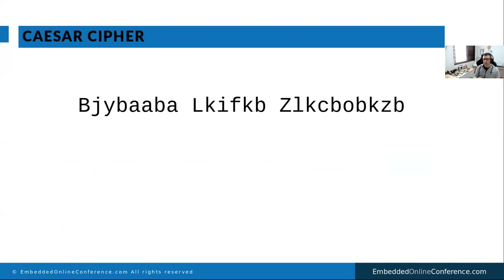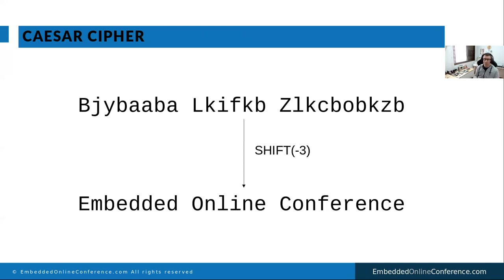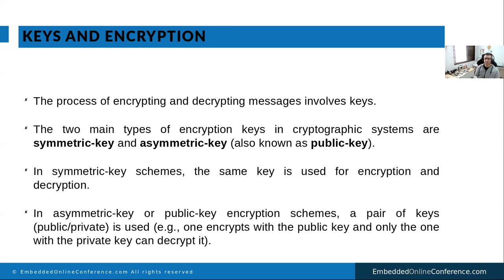Here's a simple and well-known example of encryption — a ciphertext you might recognize. This uses the Caesar cipher: it shifts characters. Our key here is minus three, so D becomes A, E becomes B, and so on. It's a very simple cipher.